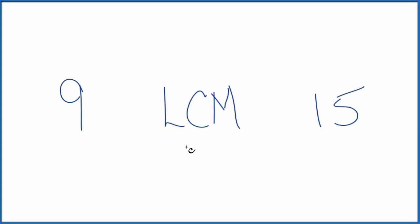Let's find the least common multiple, the LCM of 9 and 15. What we're trying to find is what number, what's the lowest number that 9 will go into and 15 will go into.